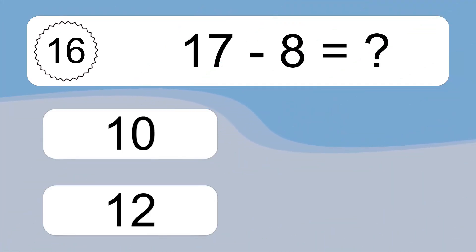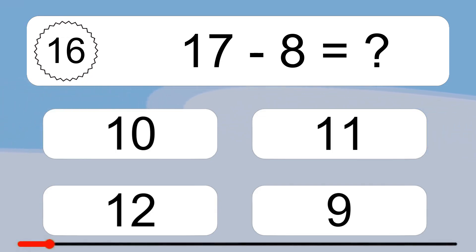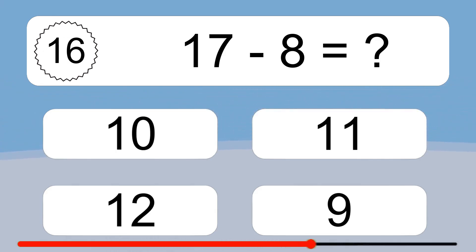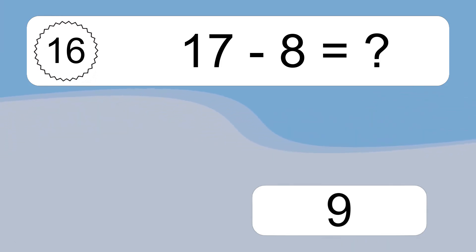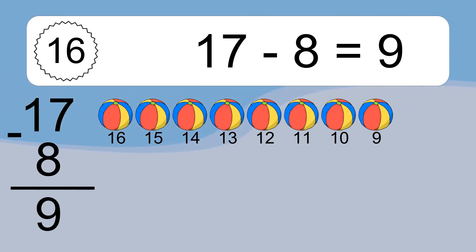17 minus 8 equals what? 17 minus 8 equals 9. Let's count it: 16, 15, 14, 13, 12, 11, 10, 9.